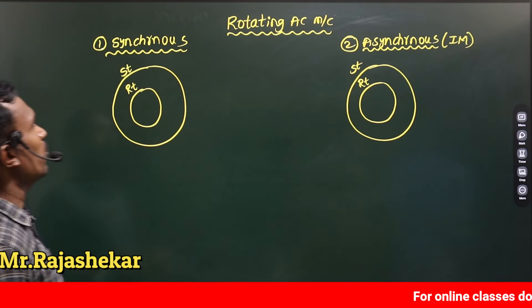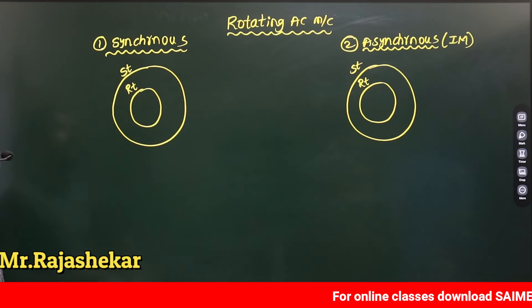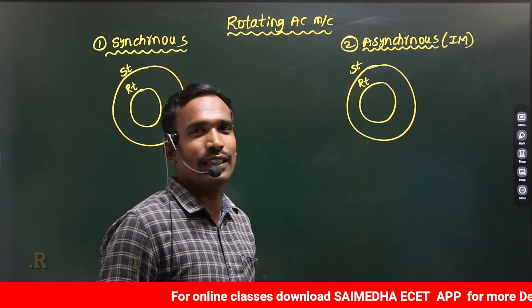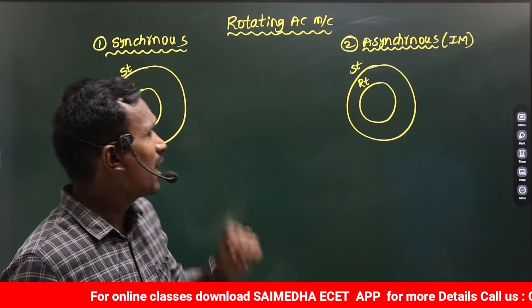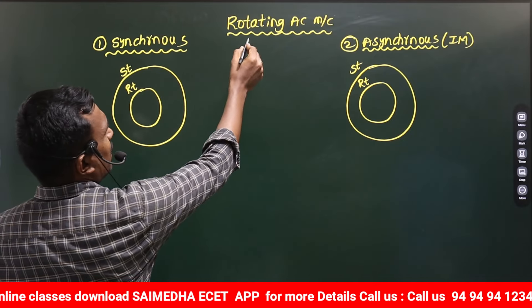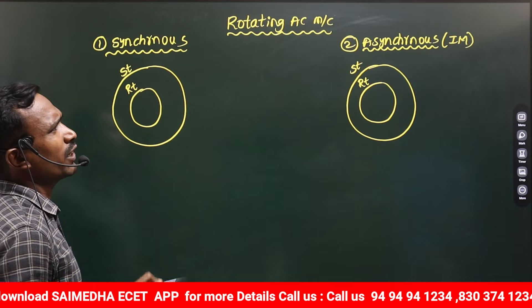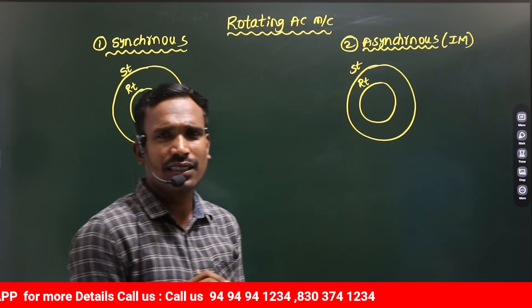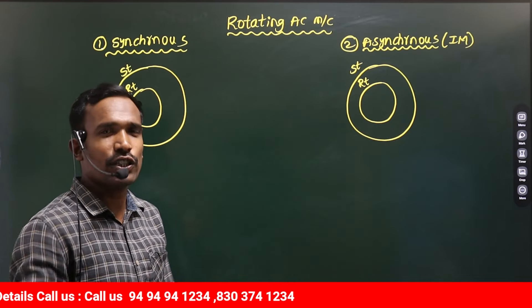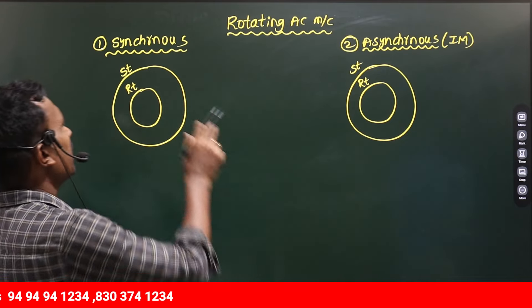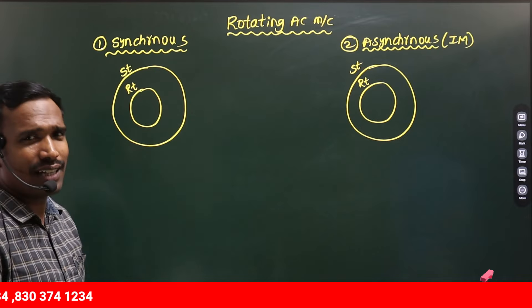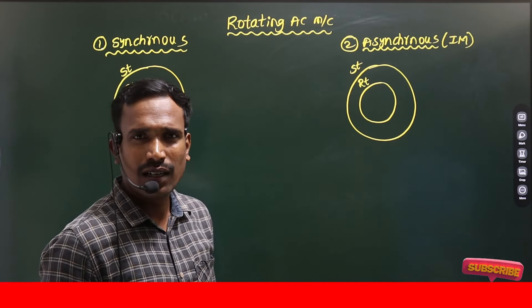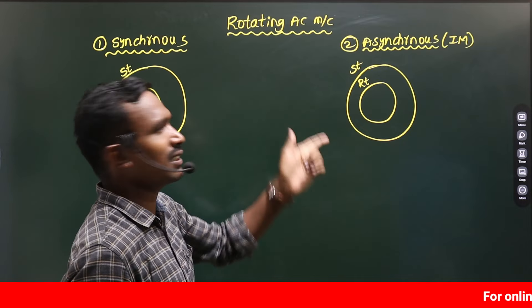Hi guys, in this video we are going to discuss the differences between Synchronous and Asynchronous machines. Generally, rotating AC machines are of two types: one is called Synchronous machine and the other is called Asynchronous, also known as Induction machines. For example, we have Synchronous motor and Asynchronous motor, and I am trying to explain the differences between these two.